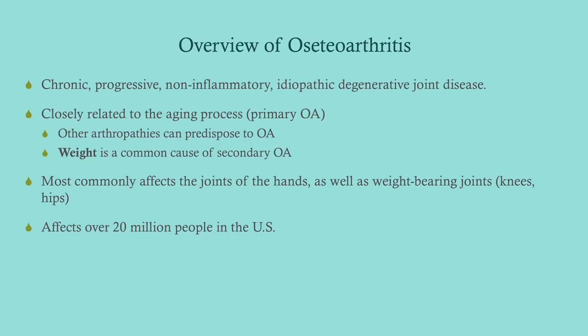So what is osteoarthritis? It is a non-inflammatory, degenerative joint disease — so non-inflammatory and degenerative. It's also chronic: once you get it, you're pretty much living with it for the rest of your life. It is progressive and can get worse absent any kind of therapy. It is closely related to the aging process, so as you get older you're more and more likely to develop this.